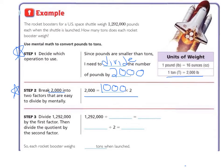Step 3. Divide 1,292,000 by the first factor, which would be our 1,000 over here. That's our first factor. Then divide the quotient by the second factor. So I'll go ahead and label these. First factor, and second factor.